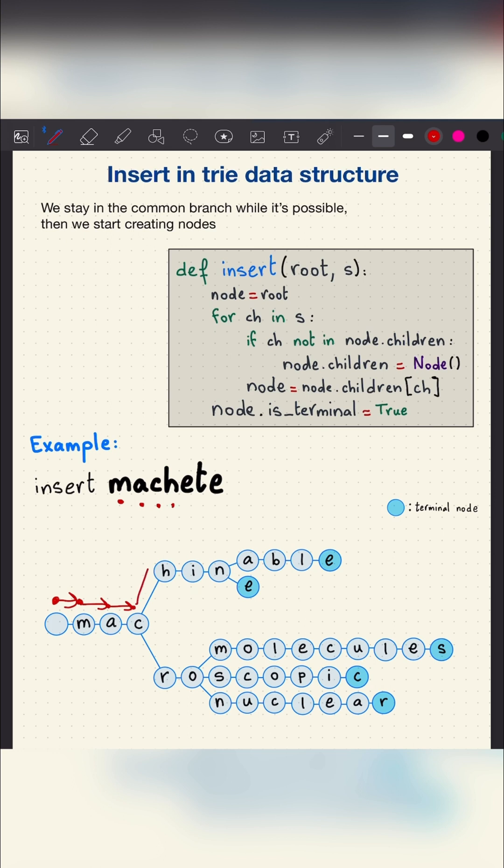Then H, we already have it. Then the letter E, we can see that we don't have it in the children of the current node. So we need to create a new node that contains the letter E, and we go to it. Then we have the letter T, same thing, we need to create a new node. Then we have the letter E, same thing.